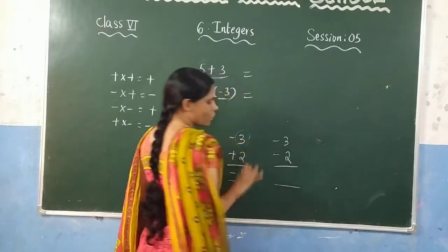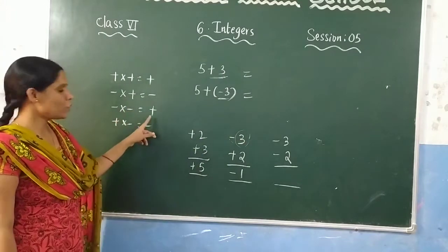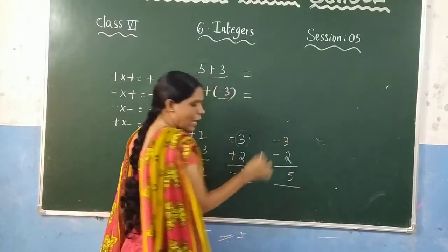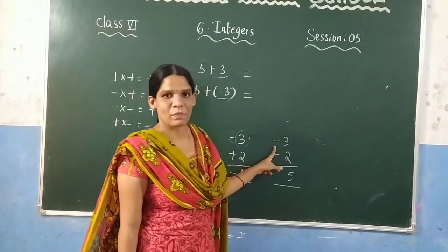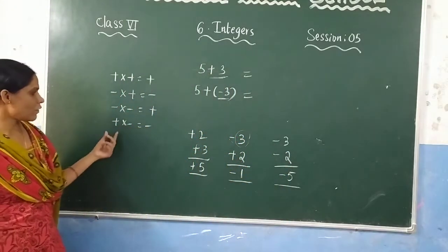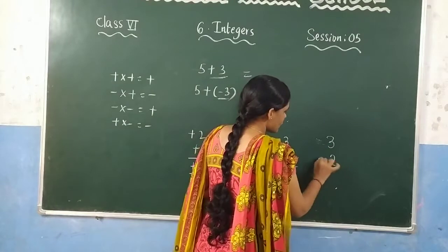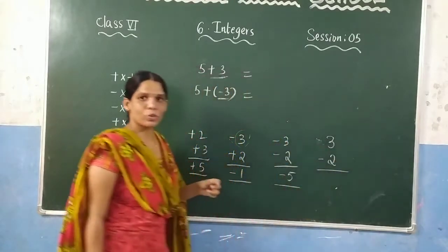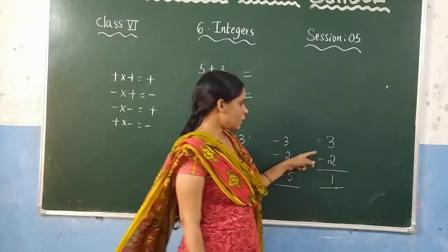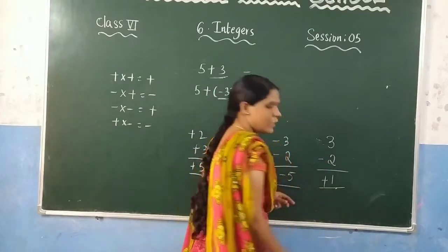Now for minus 3 and minus 2: if both numbers have a negative sign, you add them. 3 plus 2 is 5, and since the bigger number's symbol is minus, the answer is minus 5. For the last case — one positive and one negative — you subtract. For example, subtracting gives 1, and since the bigger number's symbol is positive, the answer is plus 1.